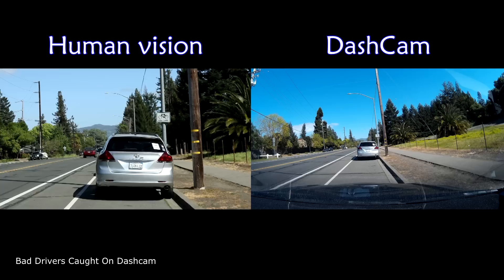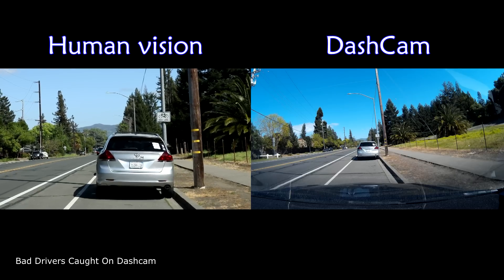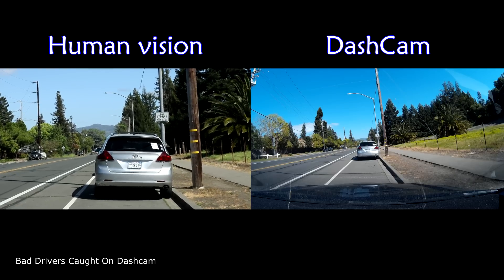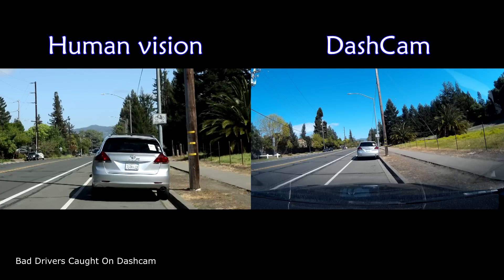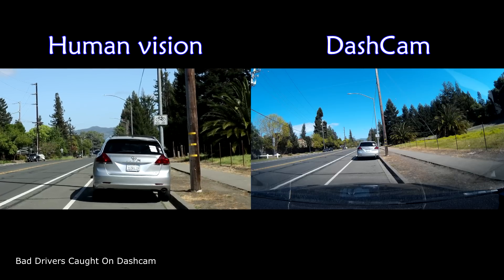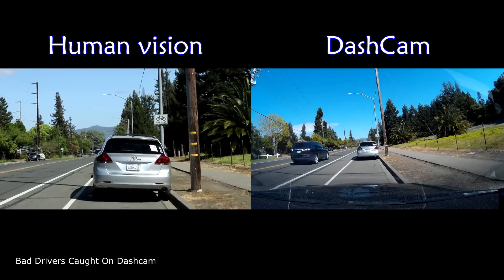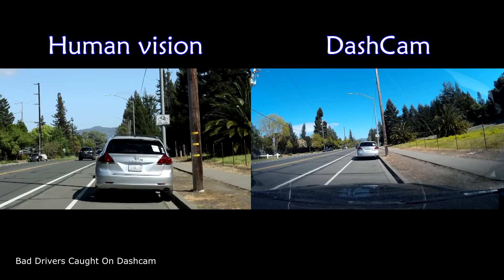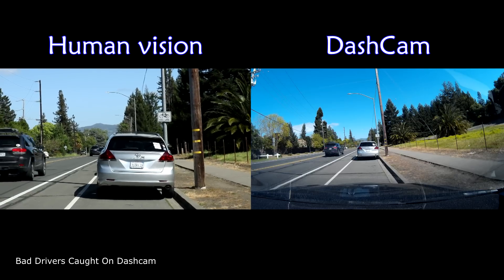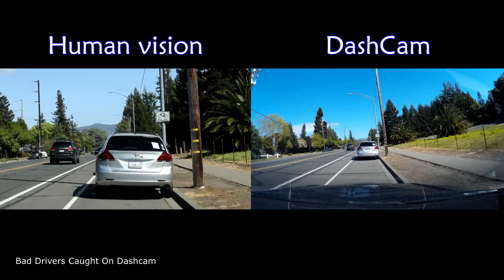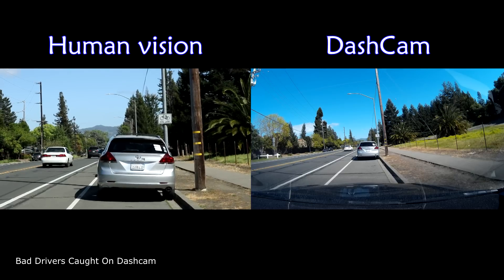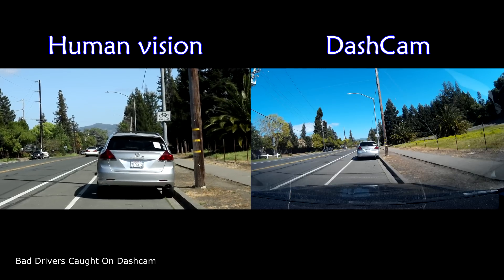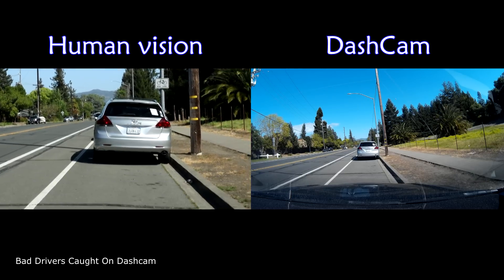And it's angled up at the same inclination as the dash cam is. But notice you can't see the hood of my car in the human eye view. In the dash cam view you can, because it's a wide-angle lens — you can see more of it.